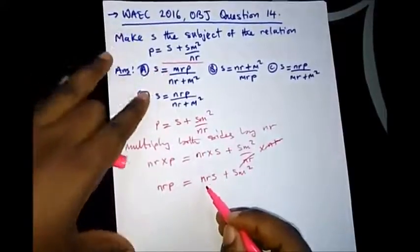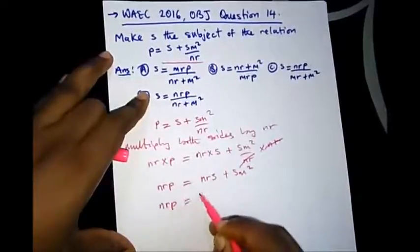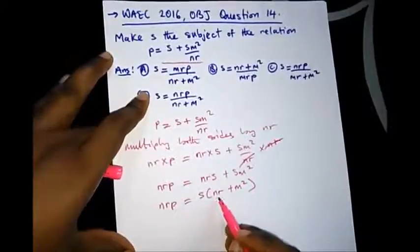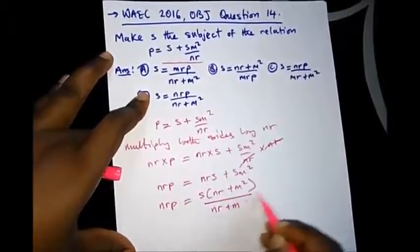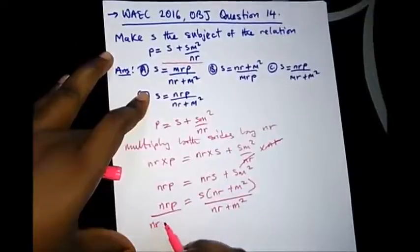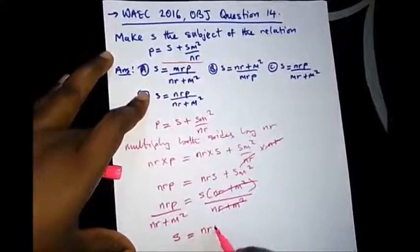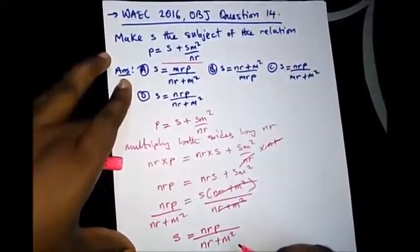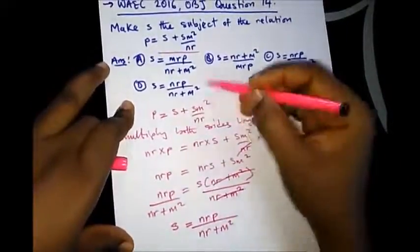Let's bring out S, since both terms share S on the right hand side. NRP is equal to S bracket NR plus M squared. Let's divide both sides by NR plus M squared to isolate S. So we have NRP over NR plus M squared. Our correct option here is option D.